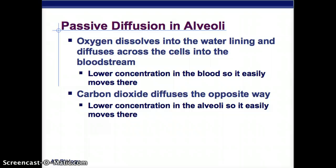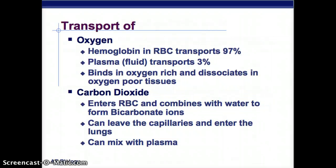Oxygen transport: hemoglobin in red blood cells transports 97% of oxygen, and plasma fluid transports 3%. Hemoglobin binds oxygen in oxygen-rich environments and dissociates in oxygen-poor tissues. For carbon dioxide: it enters red blood cells, combines with water, and forms bicarbonate ions. It can leave the capillaries and enter the lungs, mix with plasma, or be returned to the alveoli and expelled through the respiratory system.